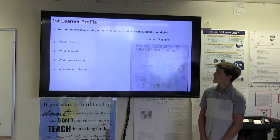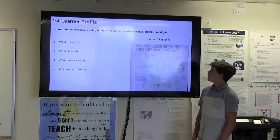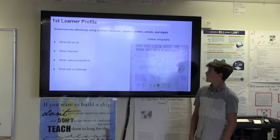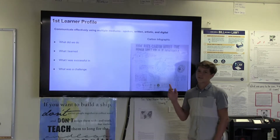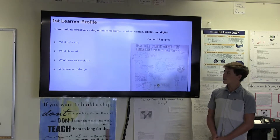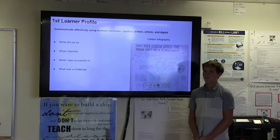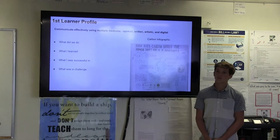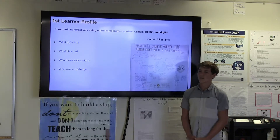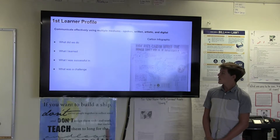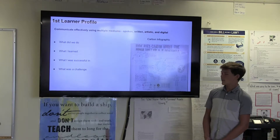My first learner profile is communicate effectively using multiple mediums: spoken, written, artistic, and digital. The artifact I'm using is the carbon infographic. The carbon infographic uses written and artistic ways of representing how carbon affects the human body. I learned a lot about the human body's effect on carbon and how carbon is affecting the world. We used the human body to learn more specifically about it, which was cool. I was successful in working with my group and getting a good grade.